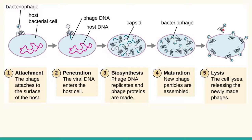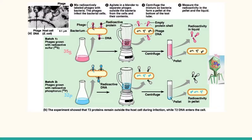By using radioactive markers, Hershey and Chase could figure out whether proteins or DNA were being inserted into the bacteria, and therefore which is the genetic material for bacteriophages. To mark the proteins on the virus coat, they used a radioactive sulfur isotope, 35S, and for DNA, they used a radioactive phosphorus isotope, 32P.